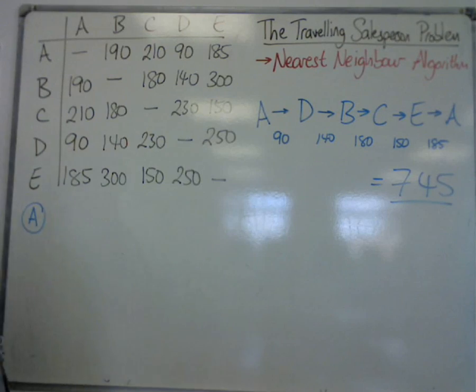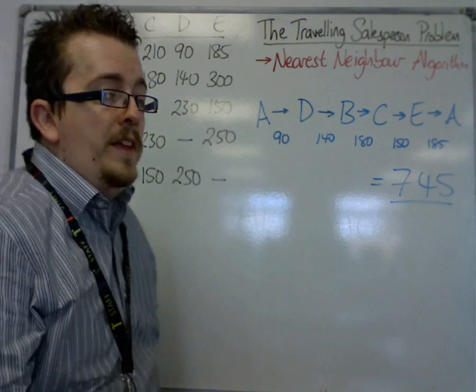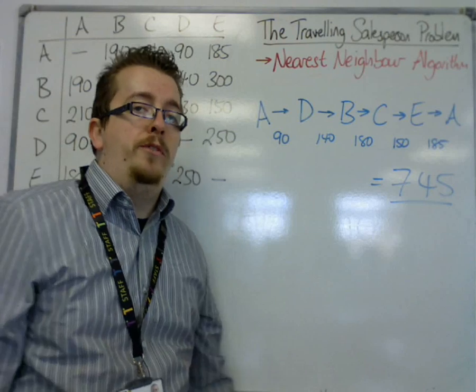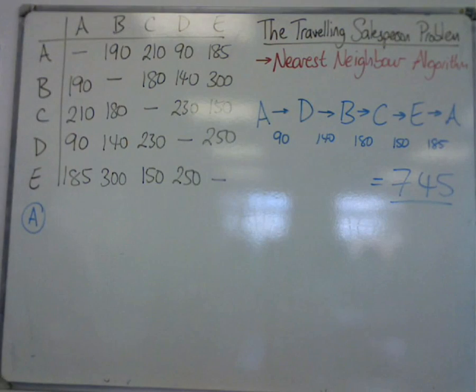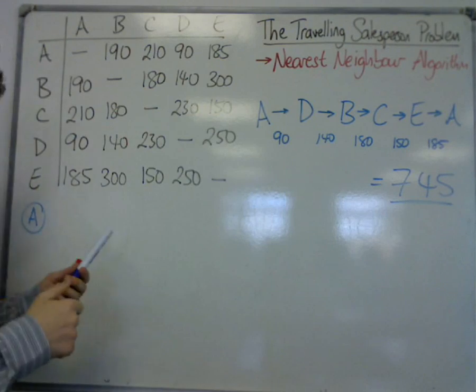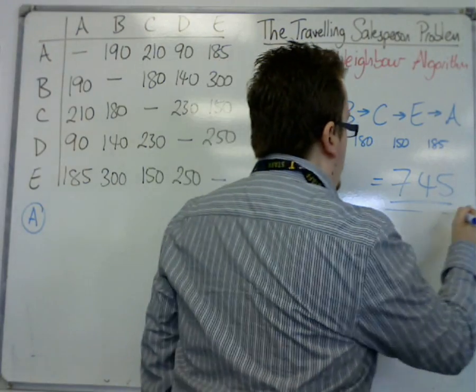And that leaves us the matrix open and ready so that we can write all over it for the lower bound algorithm if we want to. So that's the nearest neighbor algorithm there.